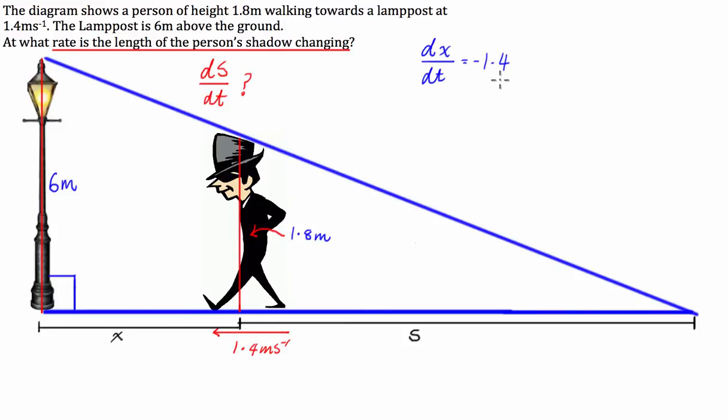Or what's that going to be? 14 over 10, which is 7 over 5. Okay, so let's just keep it as negative 1.4 meters per second.